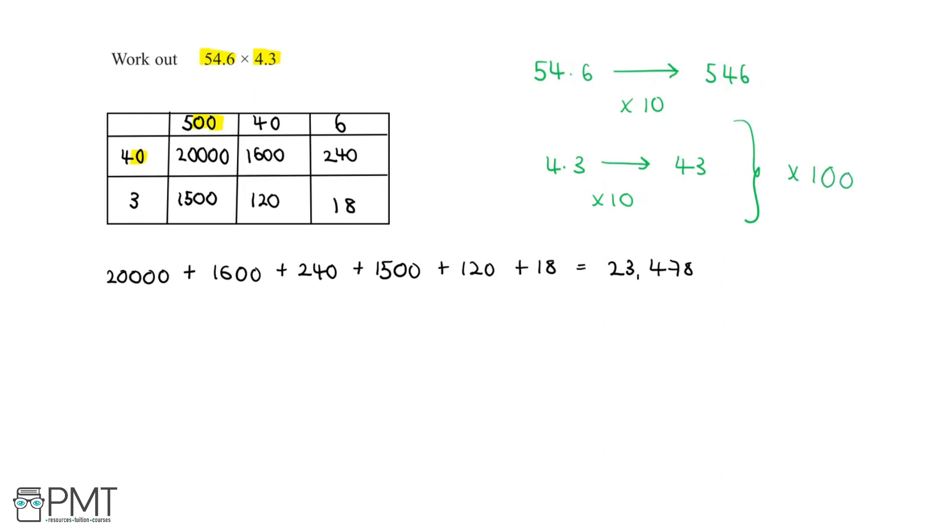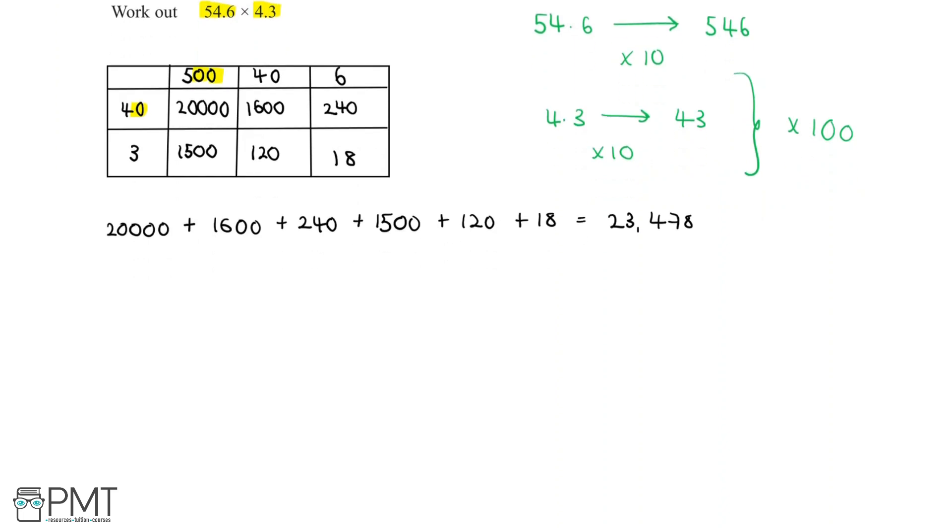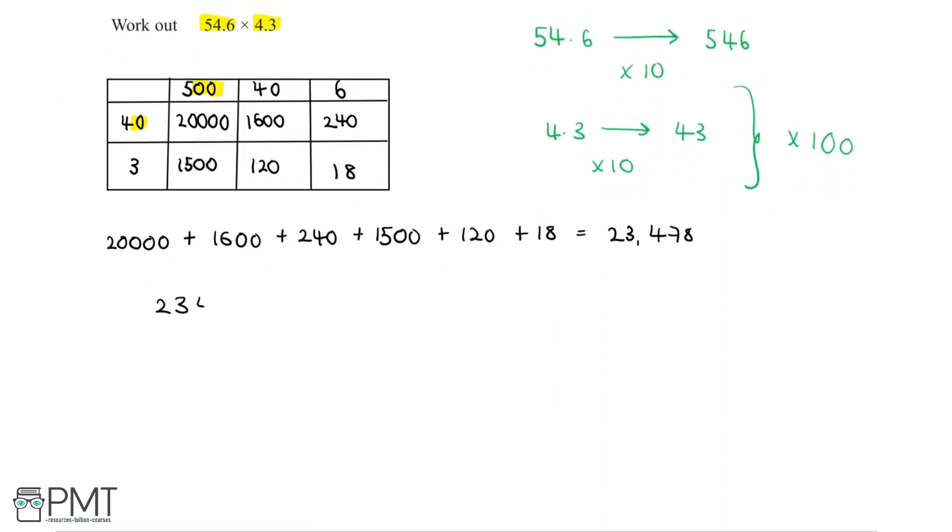So our answer for 546 multiplied by 43 is actually 100 times larger than 54.6 times 4.3. We have 23,478, but we need to divide by 100 in order to get the answer for 54.6 multiplied by 4.3. The decimal point stays at the very end for any normal number, but because we're dividing by 100, we want to move it back not just one place, but two places. The decimal point will end up right here.